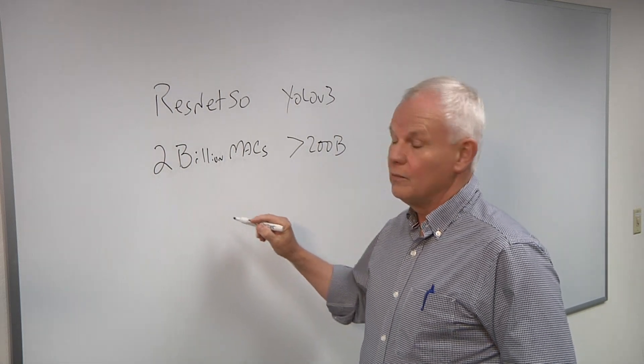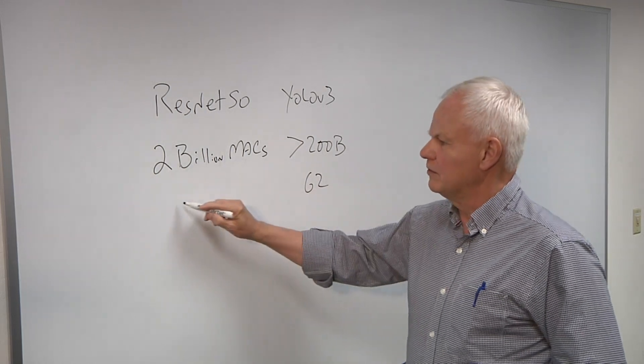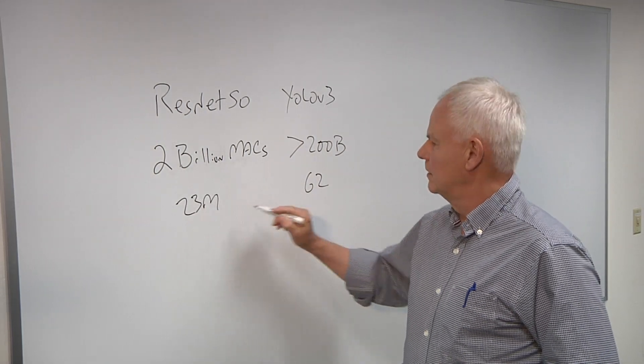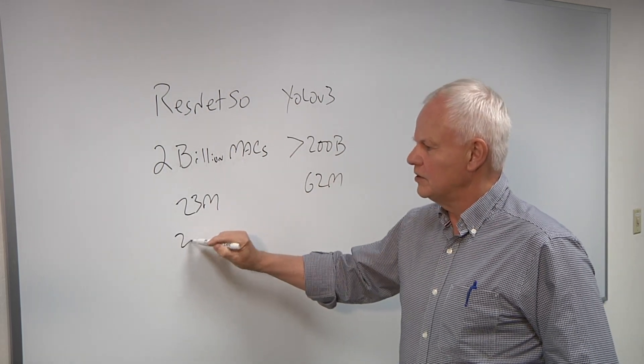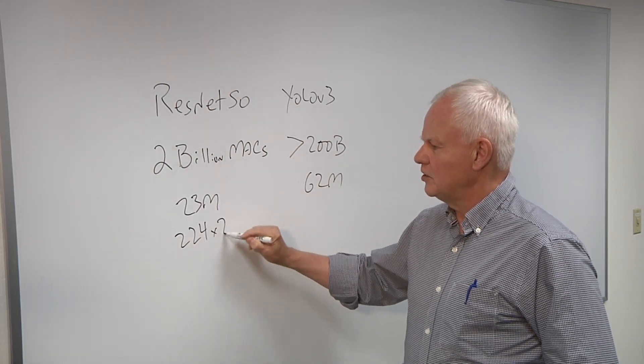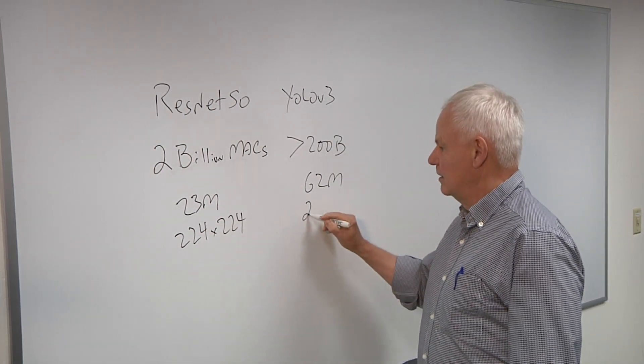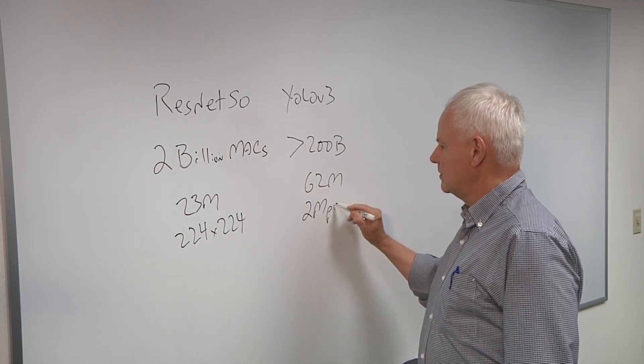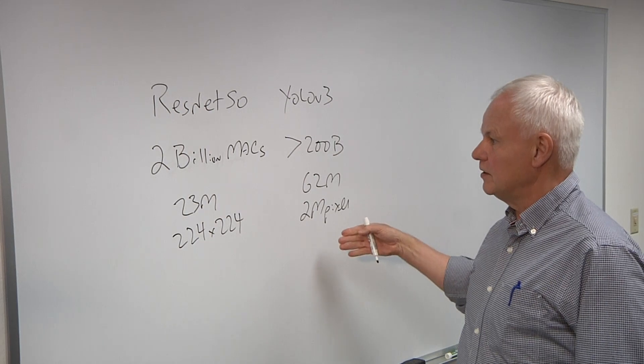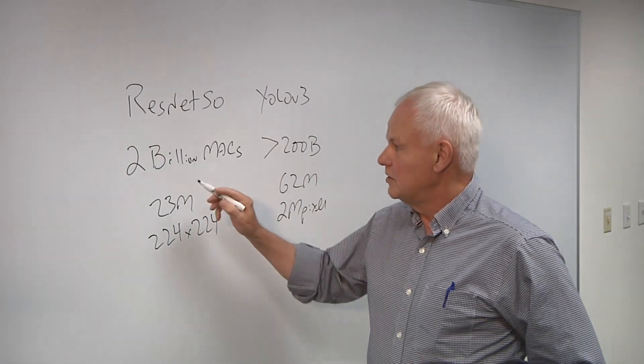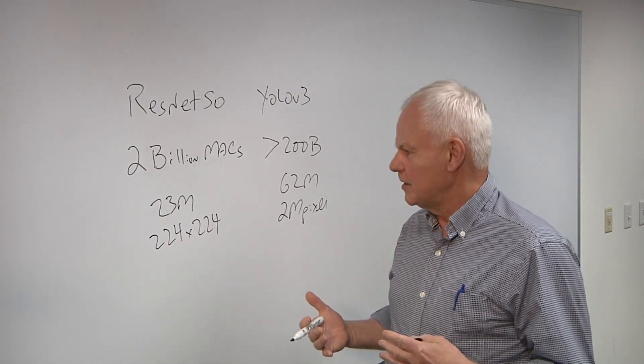Part of this is because there are more weights for YOLO-V3, 62 million weights, versus around 23 million for ResNet-50. But the biggest difference is the image size in the typical benchmark is just 224 by 224, a size nobody actually uses, versus 2 megapixels for YOLO-V3. So the computational load is much greater here. Now, these numbers are assuming batch equals 1, but the actual MAC amounts would be the same anyways.